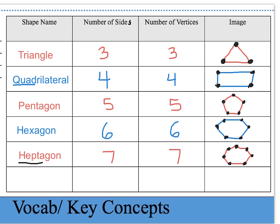The last shape we're going to talk about is called an octagon, which has eight sides and eight vertices. The most famous image of an octagon is a stop sign. We identify the vertices wherever the lines meet — eight vertices and eight sides on an octagon.